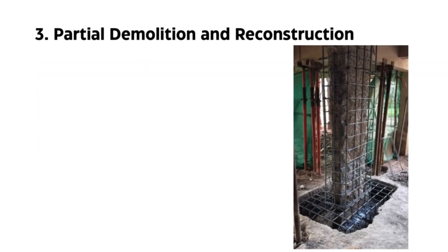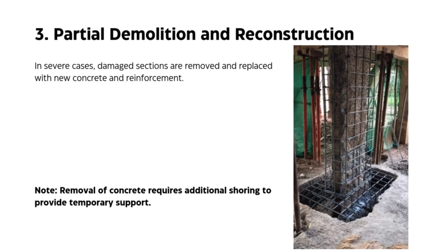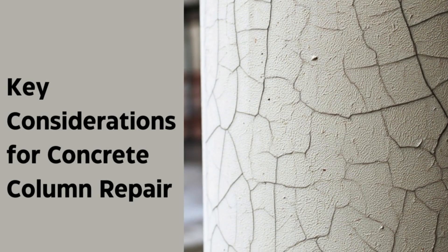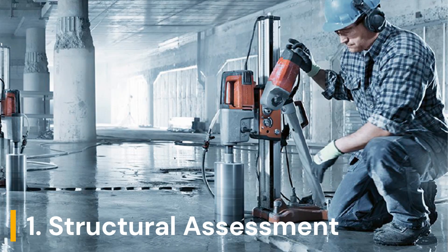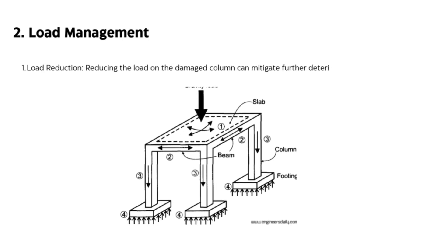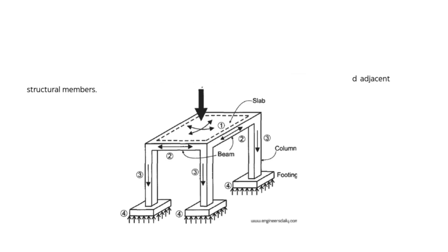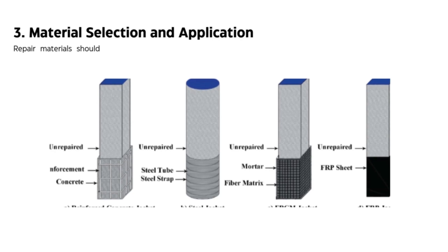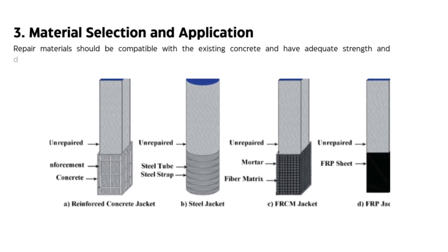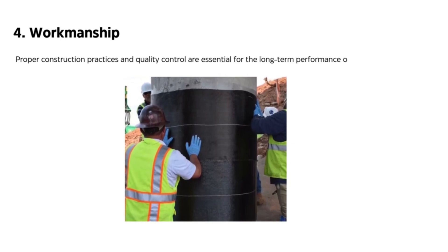In severe cases, partial demolition and reconstruction may be required — damaged sections are removed and replaced with new concrete and reinforcement. Note that removal of concrete requires additional shoring to provide temporary support. Key considerations include: a thorough structural assessment to determine the extent of damage and select the appropriate repair method; load reduction to mitigate further deterioration; load redistribution considering how it may affect adjacent structural members; and ensuring repair materials are compatible with existing concrete, with proper workmanship and quality control.